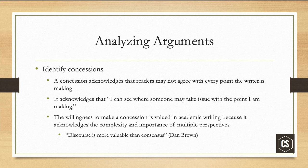In the textbook you'll see in the reading, they use the phrase 'objection.' I call this a concession — you're making a concession to the other side. A concession acknowledges that readers may not agree with every point the writer is making. It acknowledges that I can see where someone may take issue with the point I'm making. The willingness to make a concession is valued in academic writing because it acknowledges the complexity and importance of multiple perspectives.